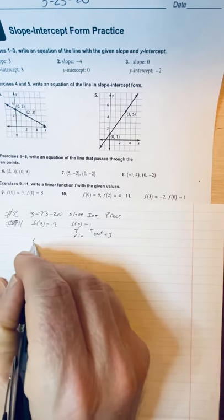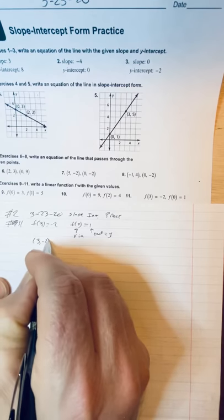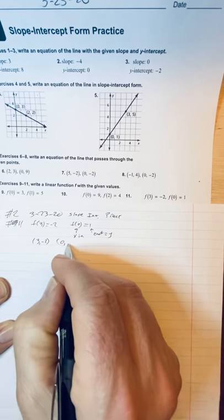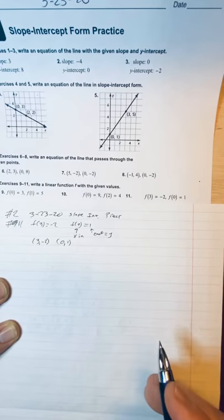All right, so I've got two equations, I've got 3 comma negative 2, and I've got 0 comma 1. So, I'm going to make a line out of that.